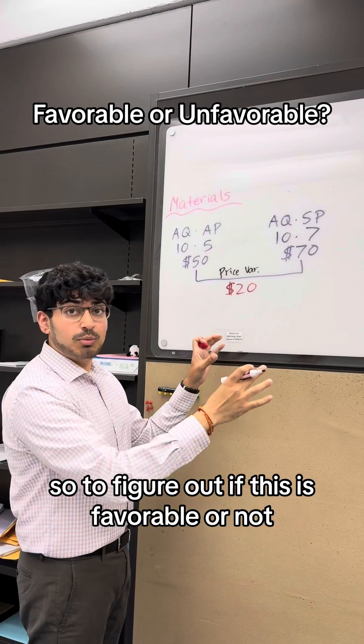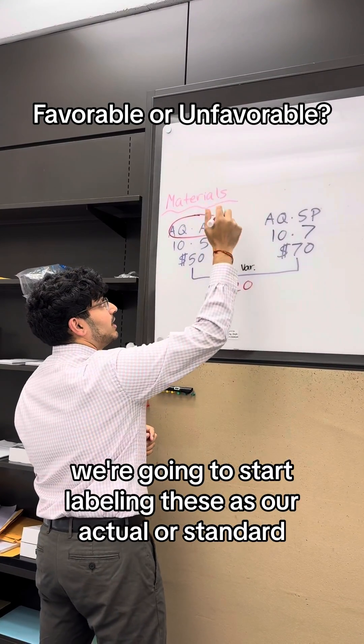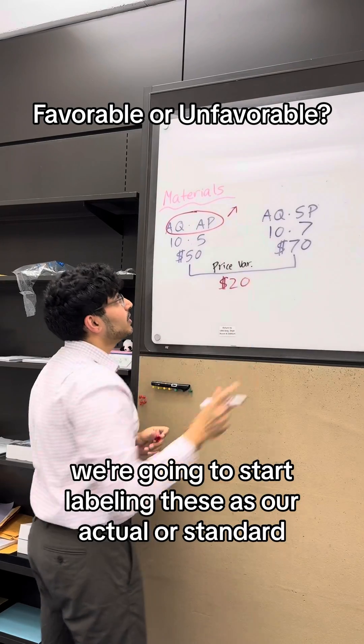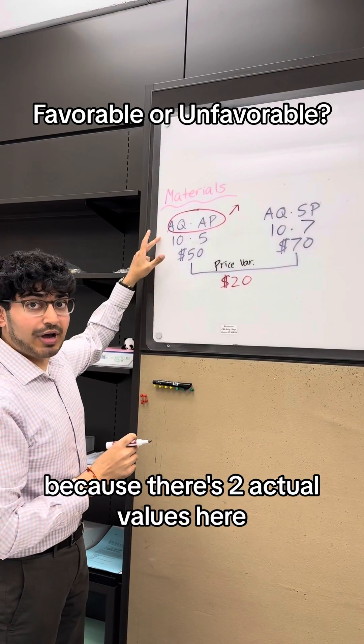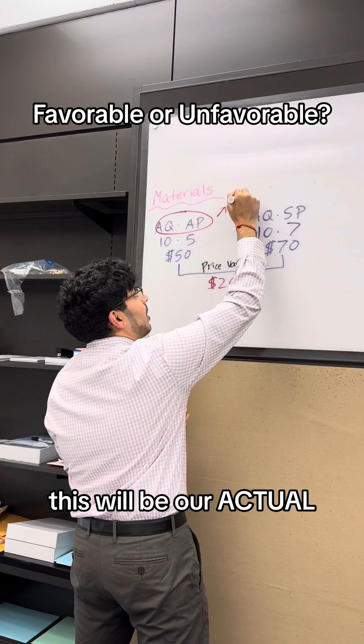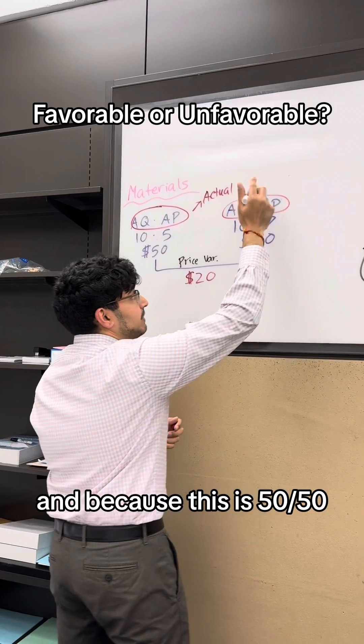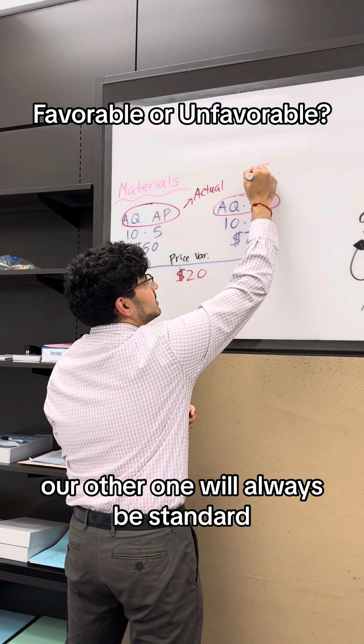So to figure out if this is favorable or not, we're going to start labeling these as our actual or standard. Because there's two actual values here, actual quantity, actual price, this will be our actual. And because this is 50-50, our other one will always be standard.